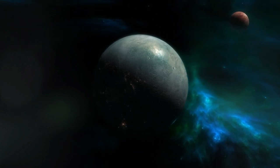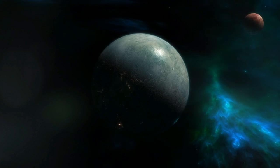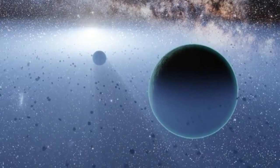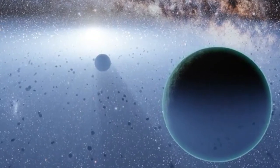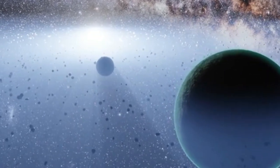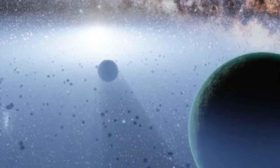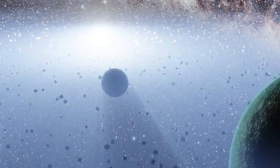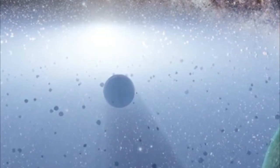Each exoplanet is a unique marvel, shaped by its formation process and environmental conditions. Even those dubbed Earth-like or Neptune-like are merely rough comparisons based on mass and size, not carbon copies of our home planet or its distant cousin. This rich variability extends to their chemical compositions, geological features, and atmospheres.